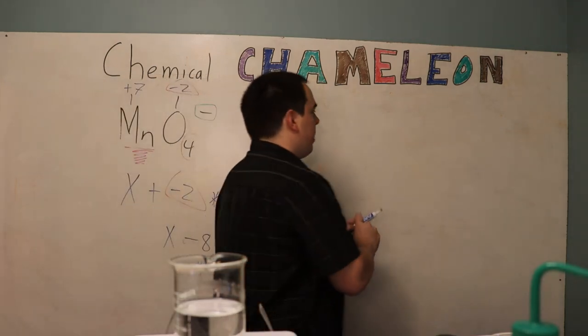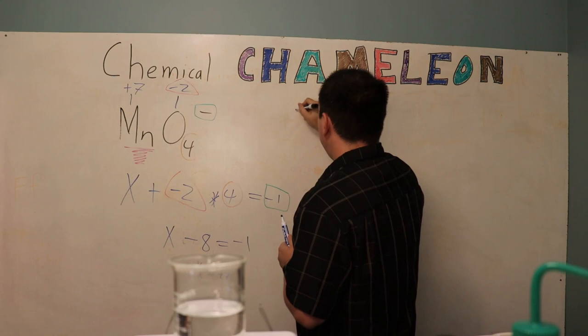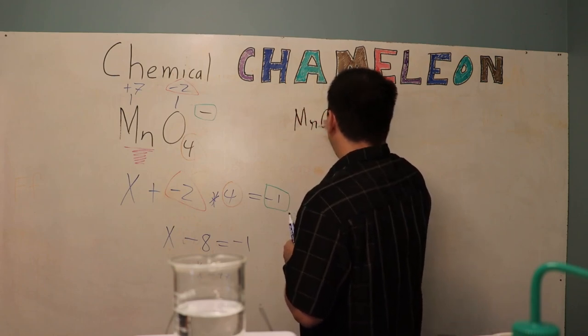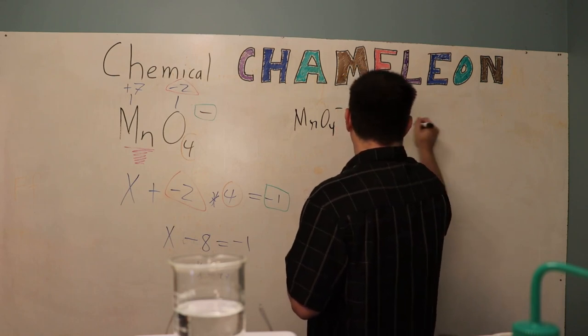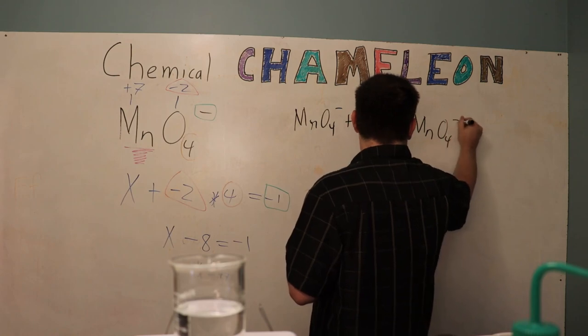Now this will go ahead and react with the sugar and we'll have our MnO4 minus. It's going to be reduced by the sugar so it's going to be adding in some electrons and we'll get MnO4 2 minus.